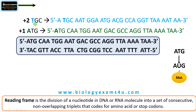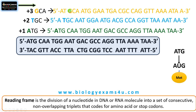Then we have the third frame. If we choose the third nucleotide — here it is G — then it will be GCA, ATG, GAA, like that. For a single strand, there are three reading frames: the plus 1 frame, plus 2 frame, and plus 3 frame.